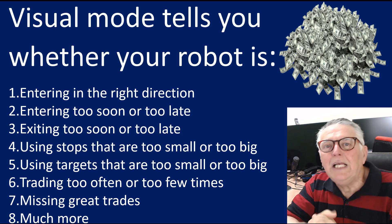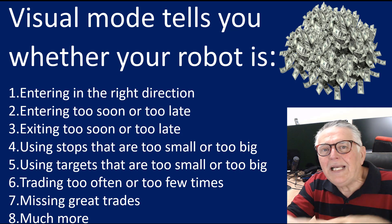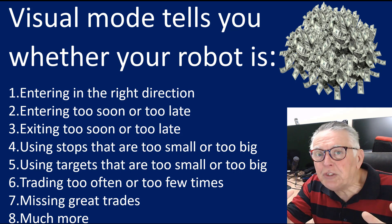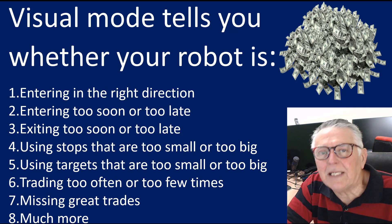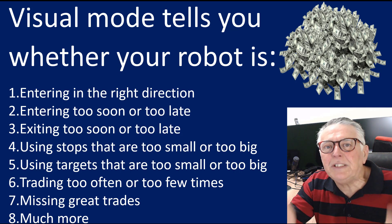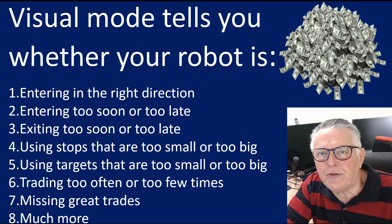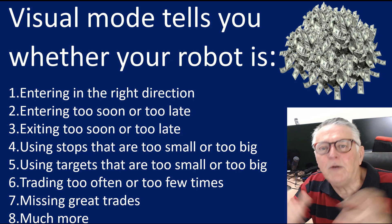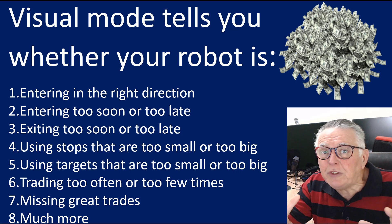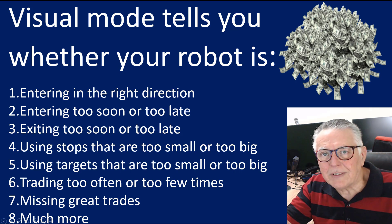Visual mode also reveals if you're missing great trades, and much more. By seeing your robot trade on the charts you get a good idea of any changes you need to make to your settings — and sometimes even to the robot itself. You can put in filters and all kinds of things, but you do need to see the trading in visual mode; you can't just look at the results.